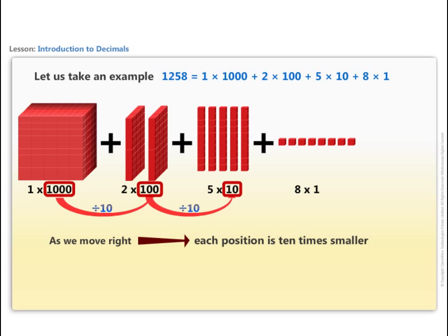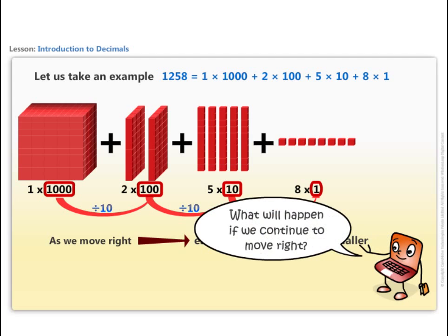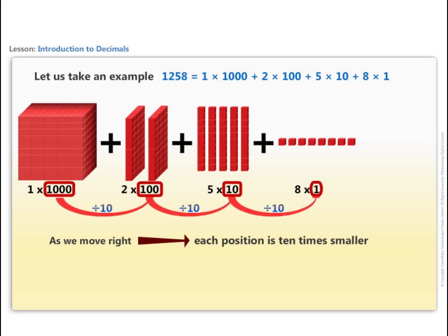Look at the pattern as we move right. Each position is ten times smaller than the earlier one. What will happen if we continue to move right? If we continue to divide further by ten we get fractions: one by ten, one by hundred, etc.